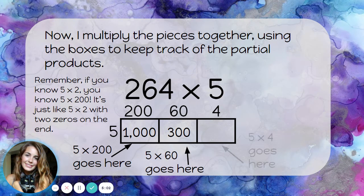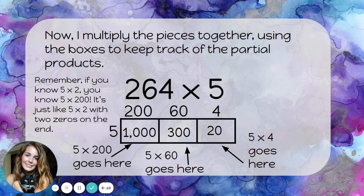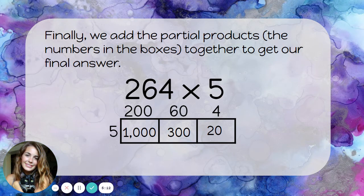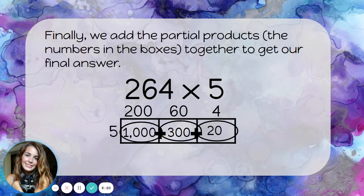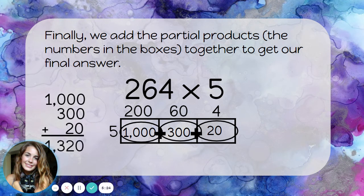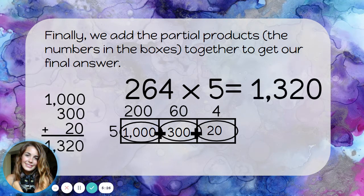The last box is where I multiply 5 times 4, and that's 20. So I have my partial products: 1,000, 300, and 20. The final step is to add those partial products back together. 1,000 plus 300 plus 20 is 1,320. So 264 times 5 is 1,320.